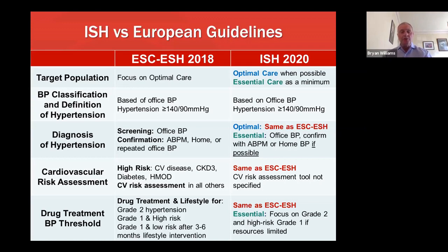In terms of drug treatment, this is recommended along with lifestyle intervention in both guidelines when there is grade two hypertension, or when there is grade one hypertension and high risk categorization, usually due to the presence of comorbid diseases or target organ damage. These patients should receive immediate treatment and lifestyle intervention.